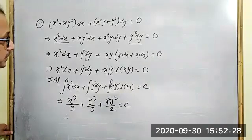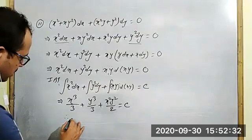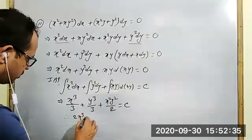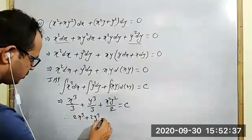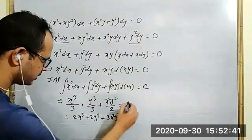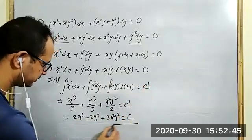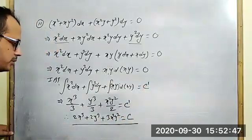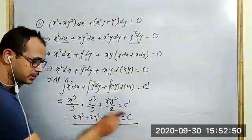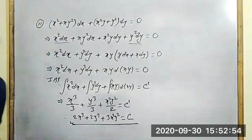Simplifying, 2x cube plus 2y cube plus 3x squared y squared equal to 6 times constant, which is equal to c, and this is the required solution.